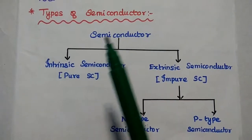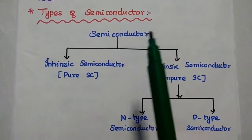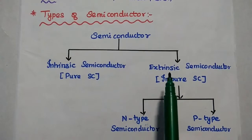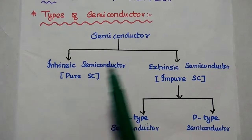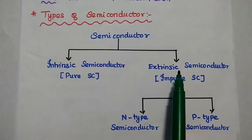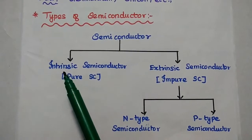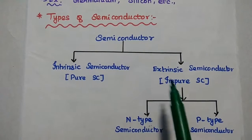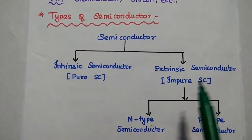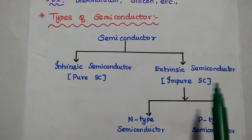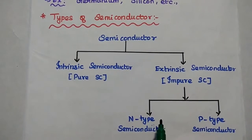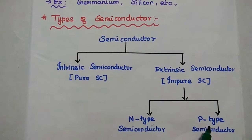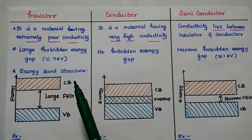The conductivity of a semiconductor is proportional to the concentration of free electrons. Examples of semiconductors are silicon and germanium. Semiconductors are classified into two types: intrinsic semiconductor, which means pure semiconductor, and extrinsic semiconductor, which means impure semiconductor. Extrinsic semiconductors are further classified into N-type and P-type semiconductors.